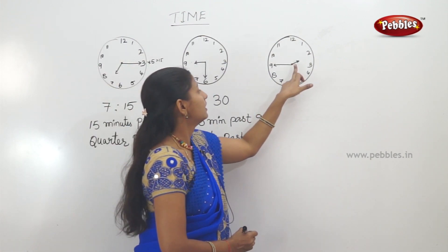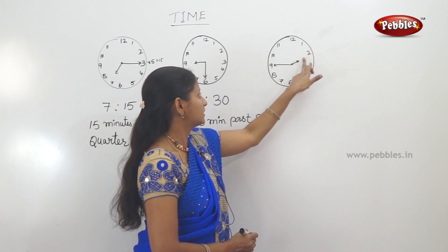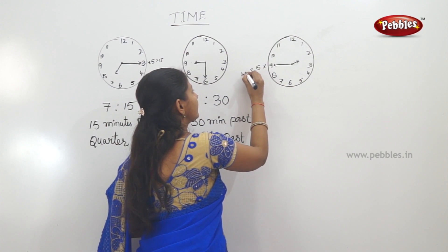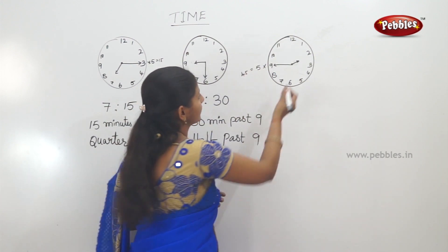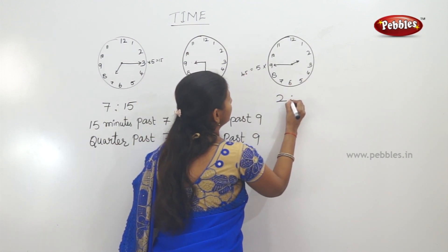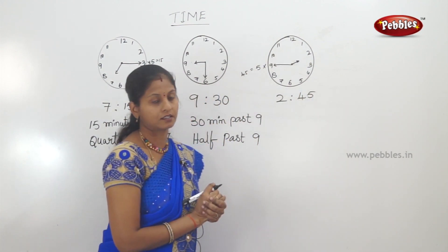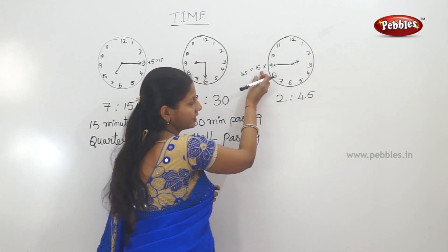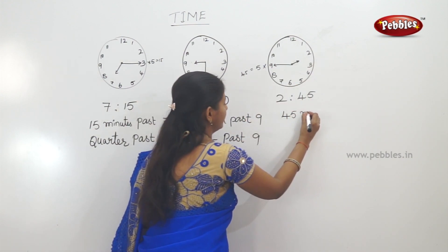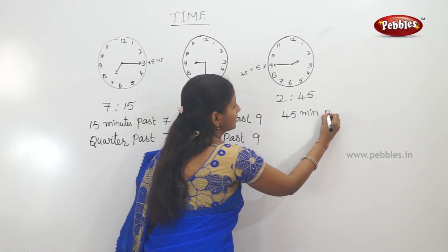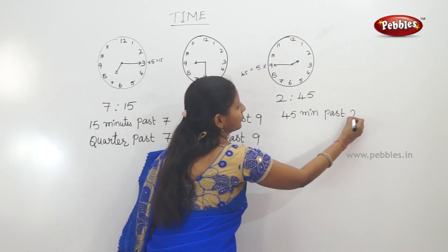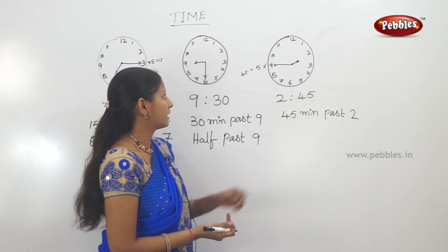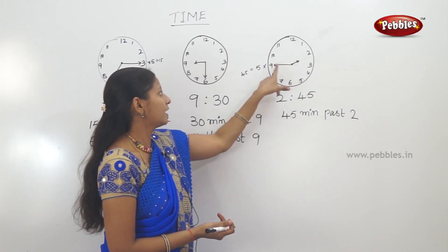Next. Here, what hours? 2 hours. Minutes — 9 into 5 is 45. So 45 minutes. 2 hours, 45 minutes. Any minutes complete — so 2 hours, 45 minutes is complete.